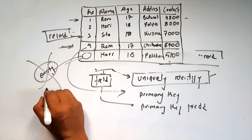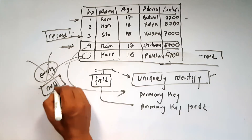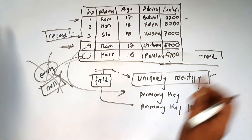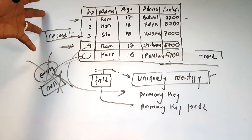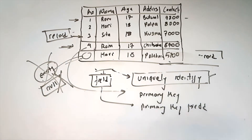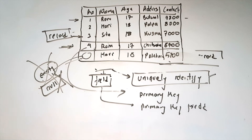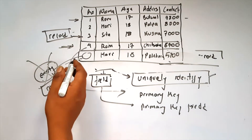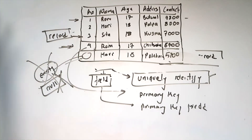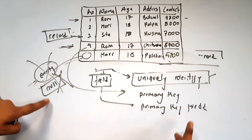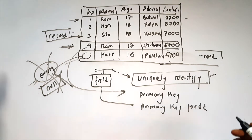A primary key value cannot be empty — that means it does not accept null values. A null value means empty. If you have to enter data, compulsory values are required. The primary key should not have an empty value; the primary key should not accept null values.